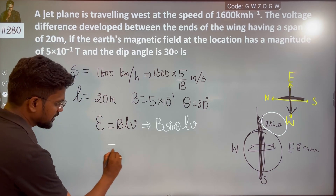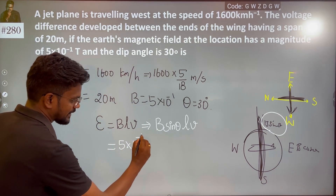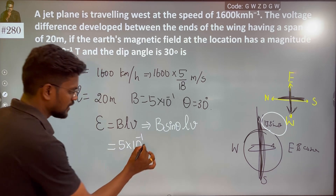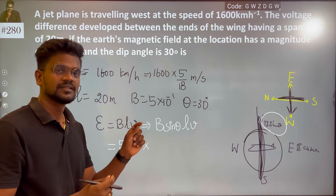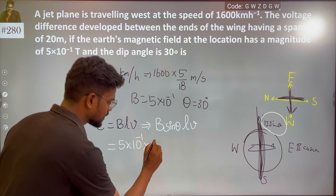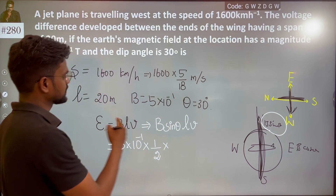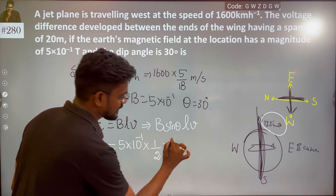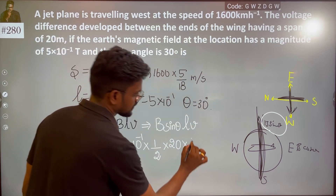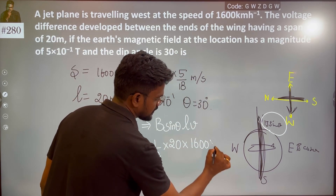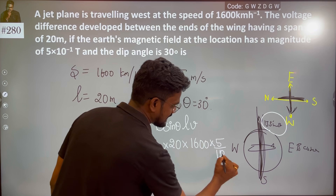B is 5 into 10 to the power minus 5. Theta is 30 degrees, so sin 30 degrees becomes 1 by 2. The length is 20 meters. And the velocity is 1600 into 5 by 18.